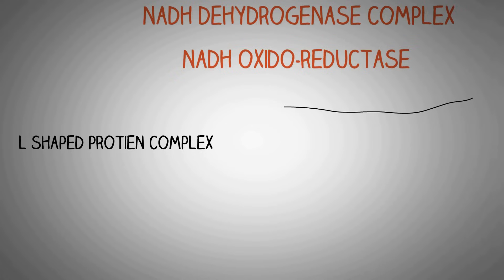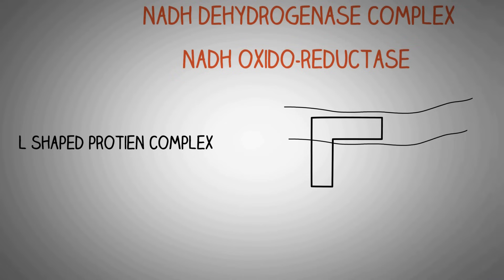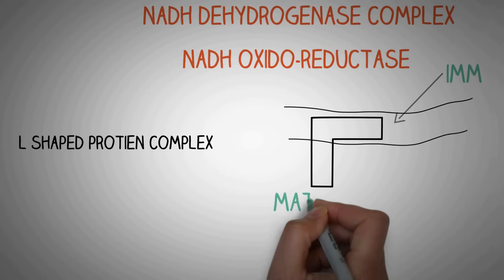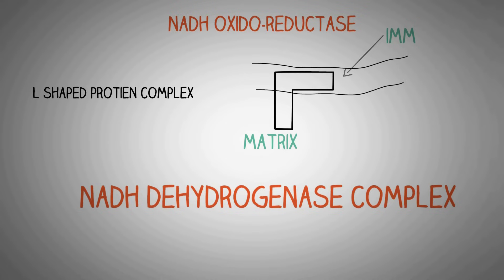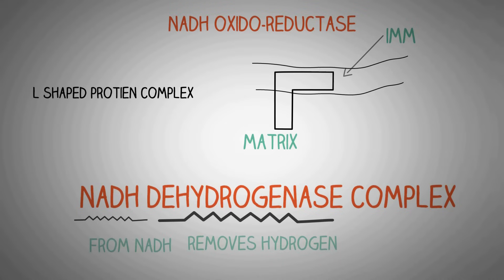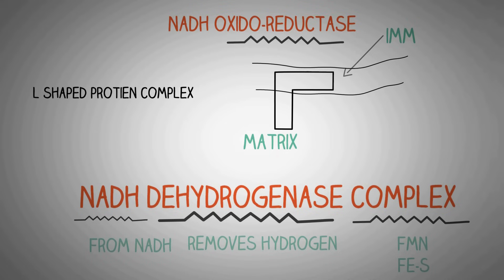Complex 1 is an L-shaped protein complex present in the inner mitochondrial membrane. It has two arms: the vertical arm is located inside the inner mitochondrial membrane, while the horizontal arm is located inside the matrix. It is called NADH dehydrogenase complex because it removes hydrogen from the reduced form of nicotinamide adenine dinucleotide (NADH). It is called a complex because it also contains flavin mononucleotides and iron-sulfur compounds. Its main job is to receive electrons from NADH and transport them further to the electron transport chain.